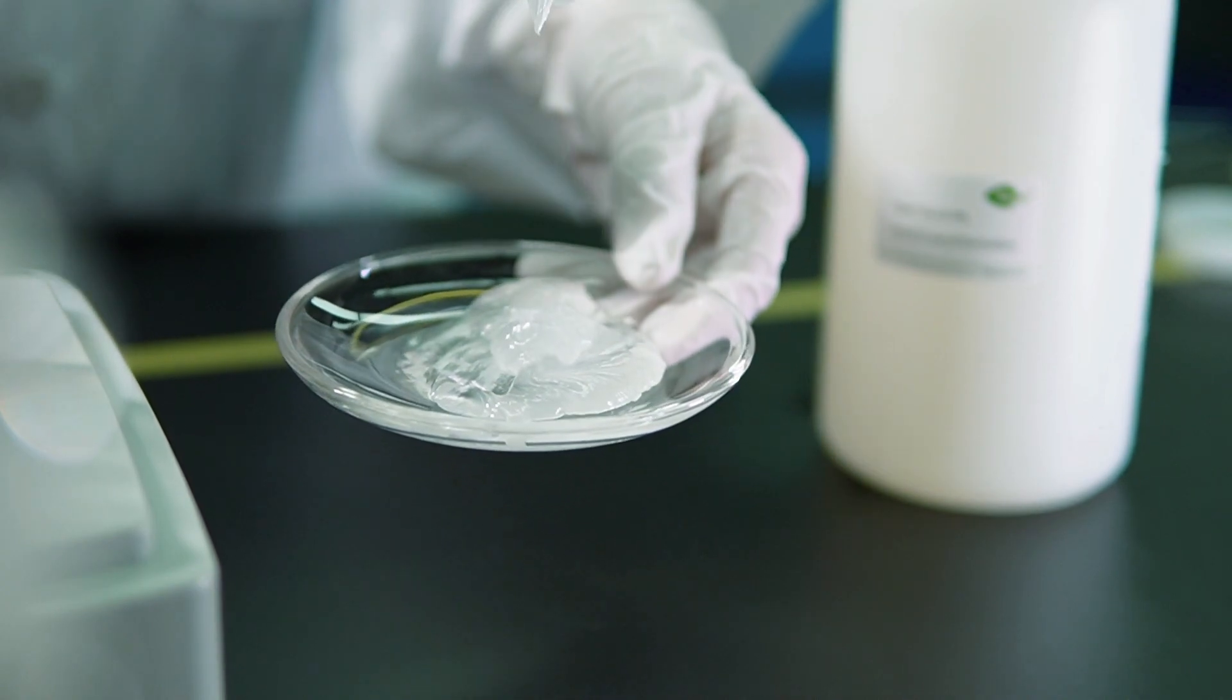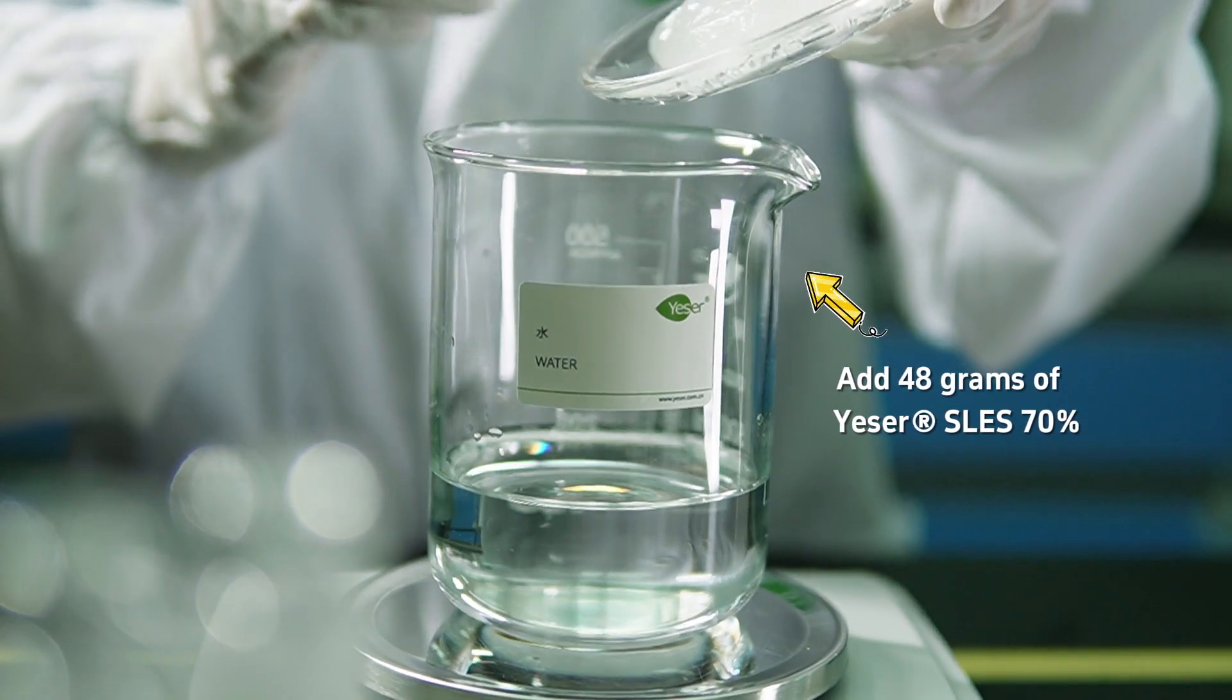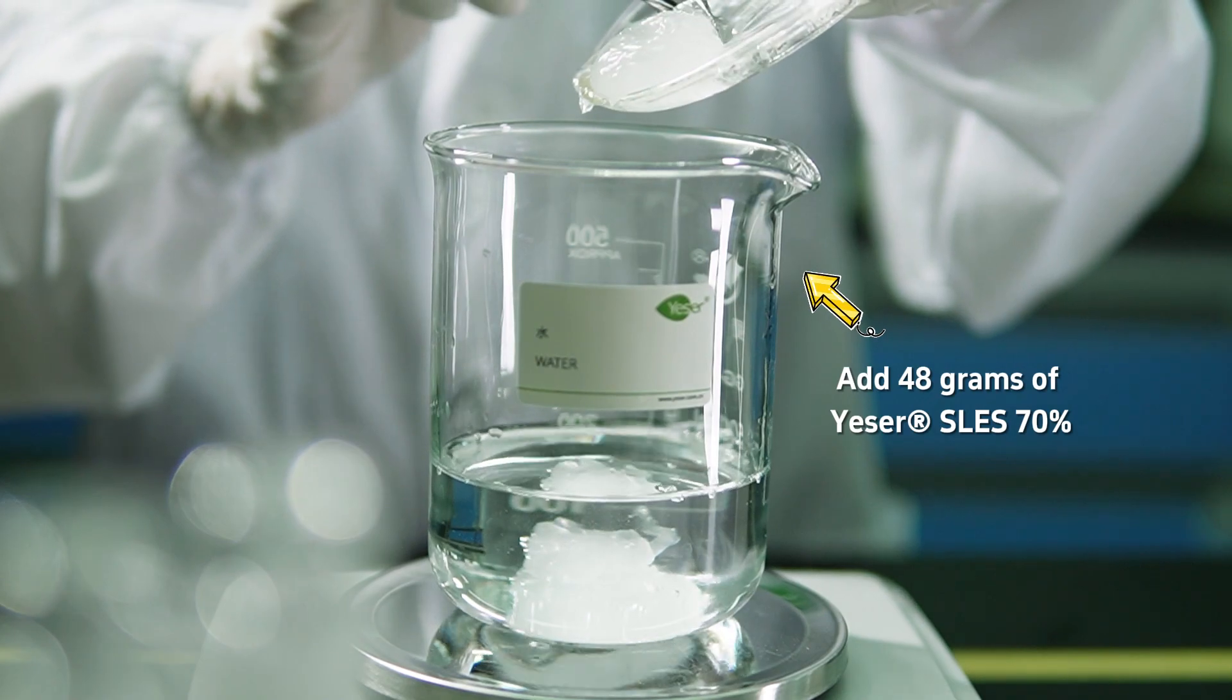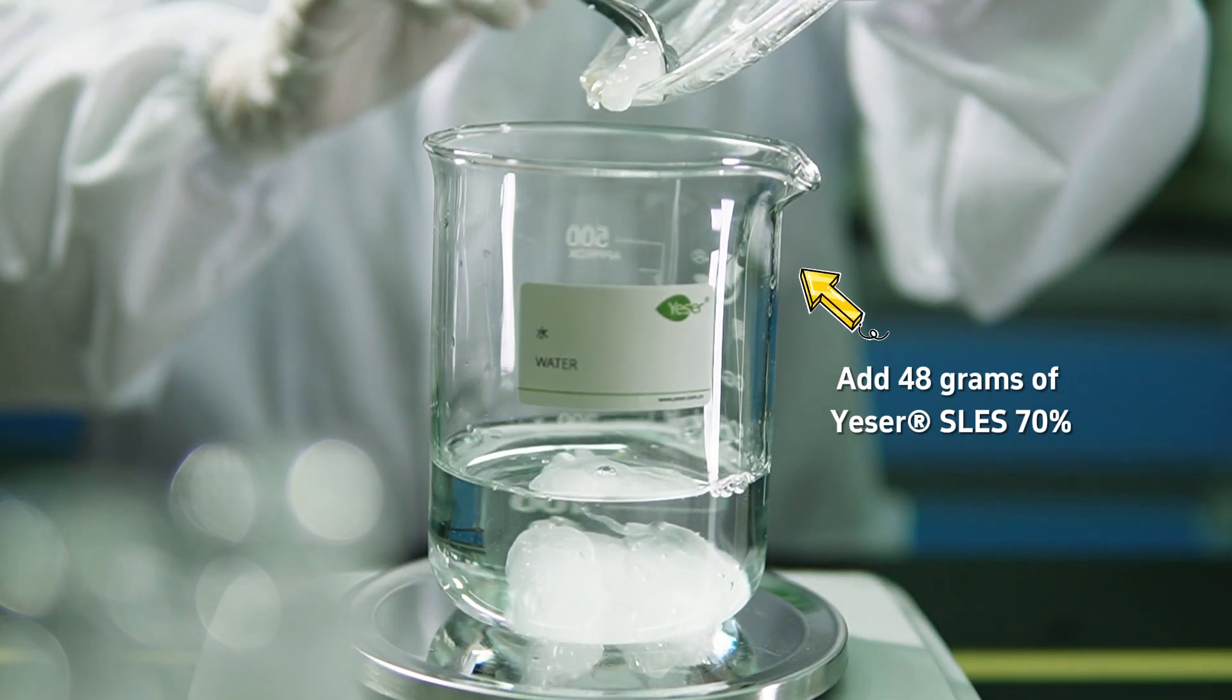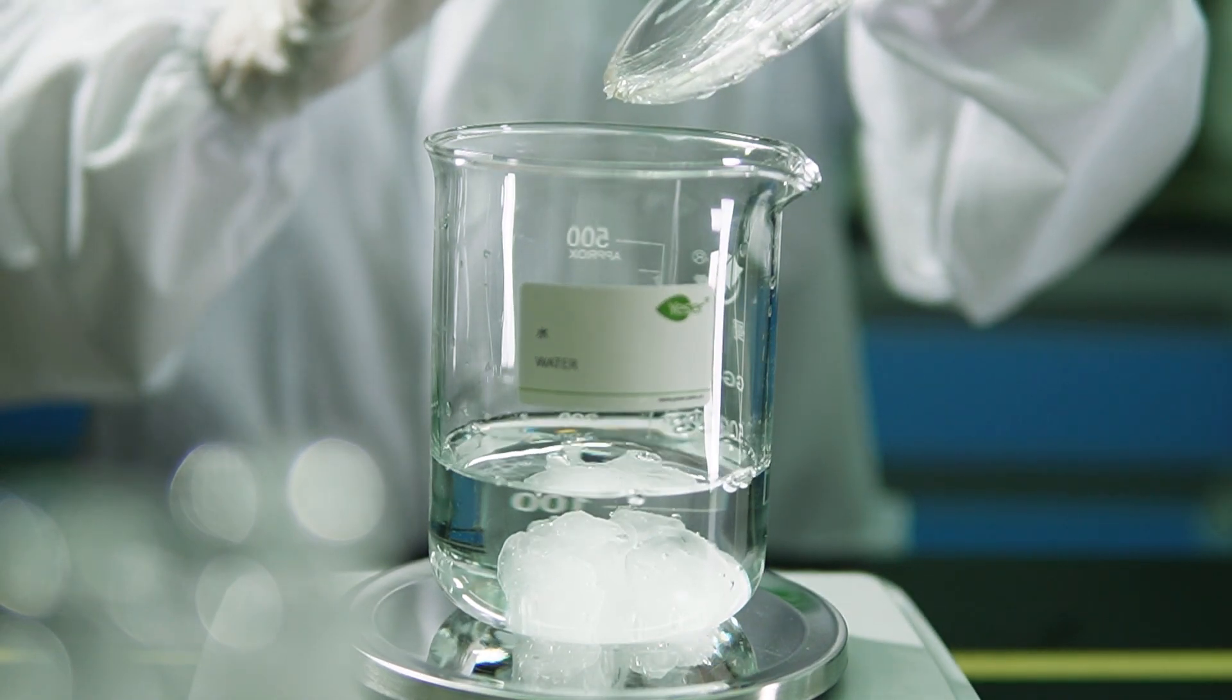It's a mild coconut-derived anionic surfactant with a great balance of cost and performance, dominantly used as a cleansing and foaming agent in mild skin touch products. For today's formula, we're adding 48 grams of SLES. That's about 16% of our total 300-gram batch, just the right amount to give our bath gel its luxurious foaming property.